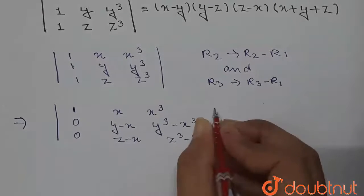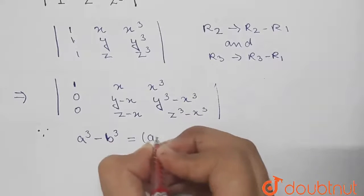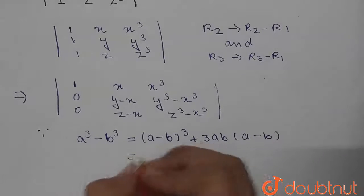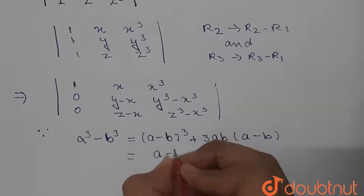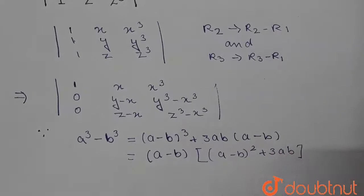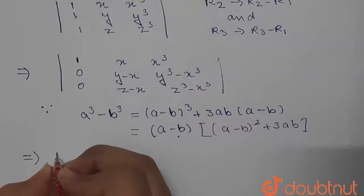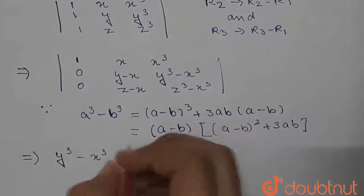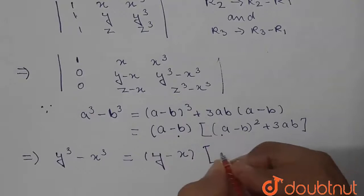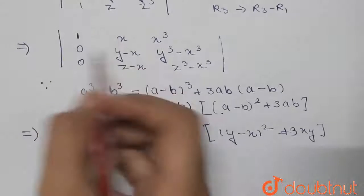Now we know the formula: a³ minus b³ equals (a minus b)(a² plus ab plus b²), which can also be written as (a minus b)[(a minus b)² plus 3ab]. In our case, a is y and b is x. So y³ minus x³ equals (y minus x)[(y minus x)² plus 3xy].